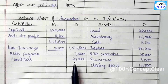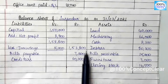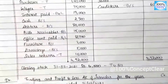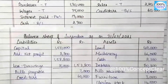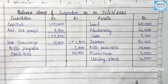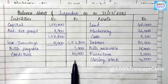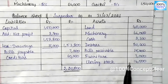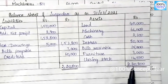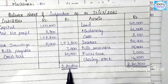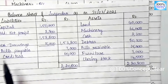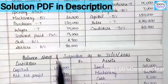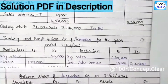Now we have all the information from the trial balance and adjustments noted in the balance sheet. We need to tally — first we add the liability side, which comes to $2,20,800. We add the assets side as well. Both assets and liabilities tally at $2,20,800. So we have completed the trading and profit and loss account and the final balance sheet.